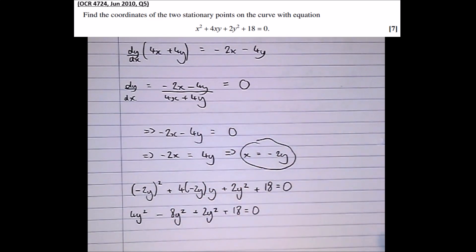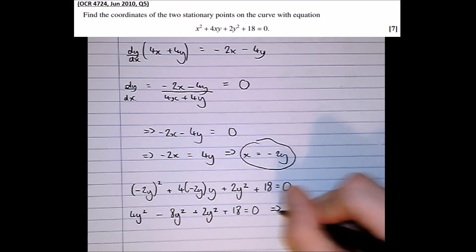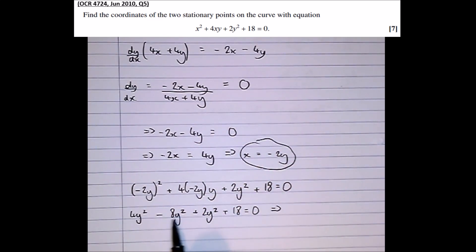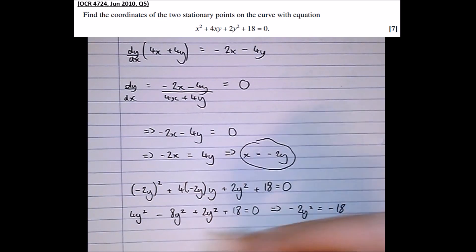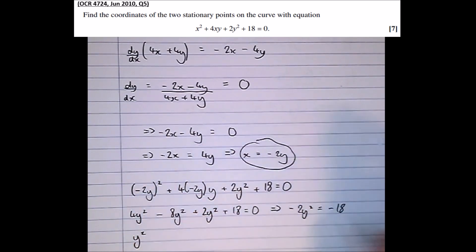Which implies that 4 plus 2 is 6, minus 8 is minus 2y squared, equals minus 18. That means that y squared equals 9, which means that y equals plus or minus 3.